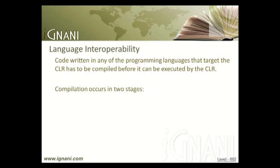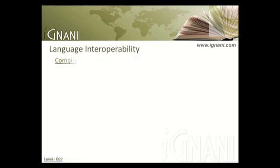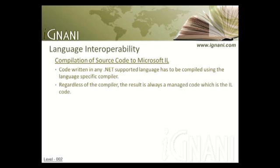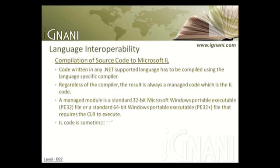Compilation occurs in two stages. First, compilation of source code to Microsoft Intermediate Language. Code written in any .NET-supported language has to be compiled using the language-specific compiler. Regardless of the compiler, the result is always managed code, which is the IL code. A managed module is a standard 32-bit or 64-bit Windows Portable Executable file that requires the CLR to execute. All CLR-compliant compilers produce IL code, which is sometimes referred to as managed code since it is managed by the CLR.